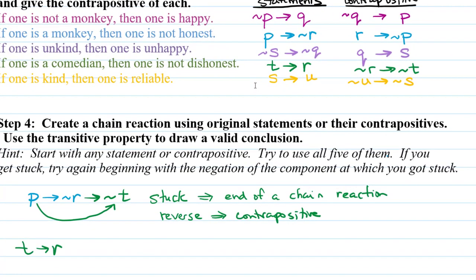T implies R in green there. And then I'm going to look, what can I do with R? Well, in blue, we have R implies not P. So I'm going to tack on not P. At this point, we've just come to what we were at the beginning when we started at P. But let's see if we can keep going now. So from not P, we can go to Q. And from Q, we can go to S. And S implies U.